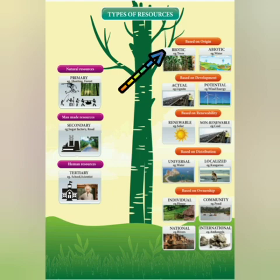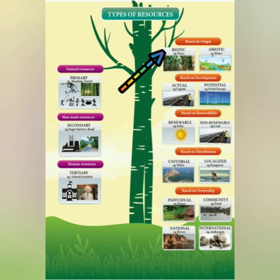Resources based on origin are classified into two types: biotic and abiotic. Biotic resources — example: trees. Abiotic resources — example: water. This classification is based on origin.